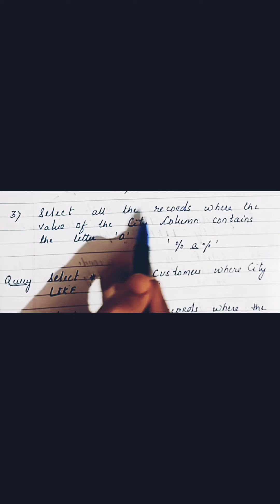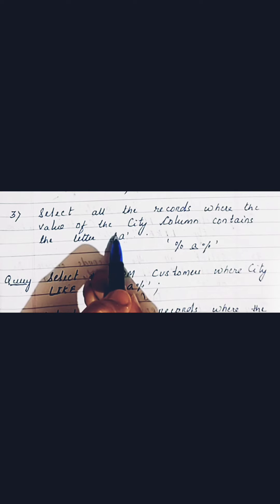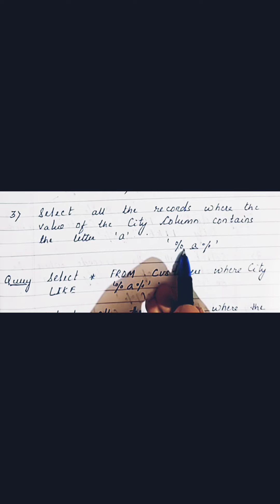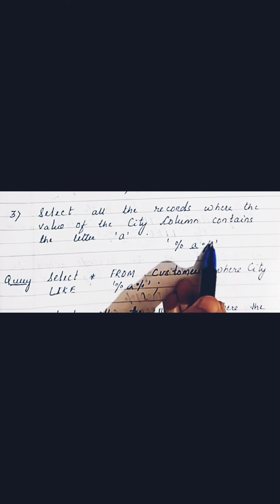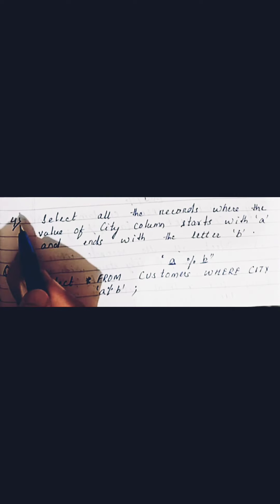Moving to the third question: select all the records where the value of the city column contains the letter 'A'. Here the starting letter is not 'A' nor is the ending letter 'A' — it only contains 'A' somewhere in between. So we use percent sign before and after 'A'. The query is: SELECT * FROM customers WHERE city LIKE '%A%'.